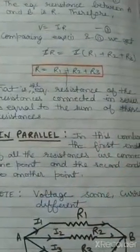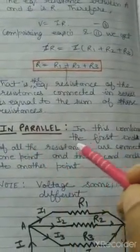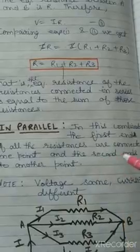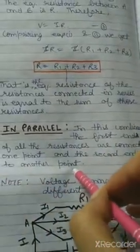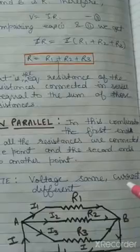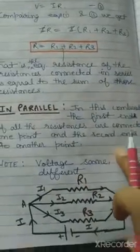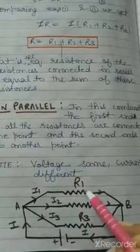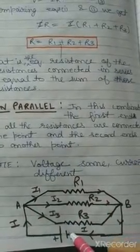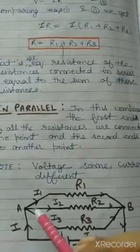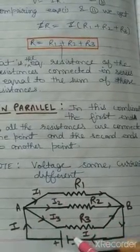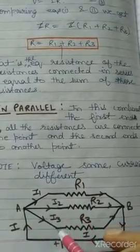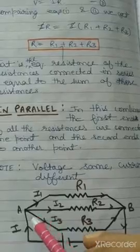Now the second is parallel combination. In parallel combination, the first end of all the resistances are connected to one point and the second ends are connected to another point. In this case, voltage will be same and current will be different, because all ends of the three resistances are connected to one point on each side. So the potential will be same across all three resistors. But when current I flows, there will be three paths for the current, so current will be divided.